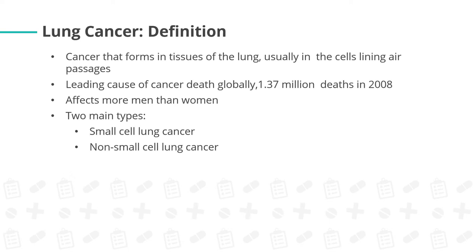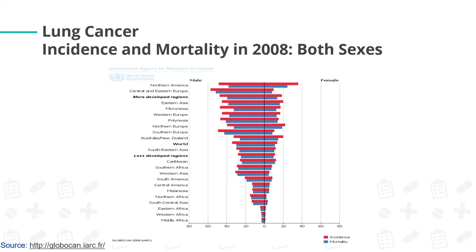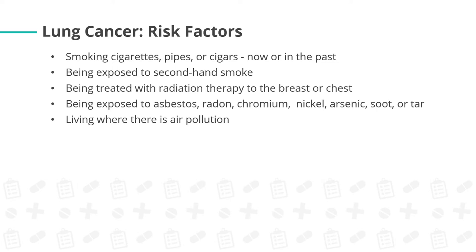Now let's move to lung cancer. This is a cancer that forms in tissues of the lung, usually in the cells lining air passages. It is the leading cause of cancer death globally, recording 1.37 million deaths in 2008. It affects more men than women because men are known to be heavy smokers. We have two main types: small cell lung cancer and non-small cell lung cancer. Females in Northern America have the highest incidence and mortality rate; for males, it is Central and Eastern Europe. Risk factors include smoking cigarettes, pipes, or cigars now or in the past.